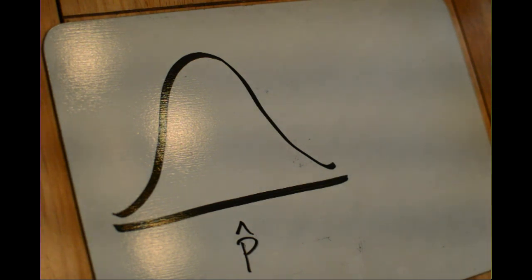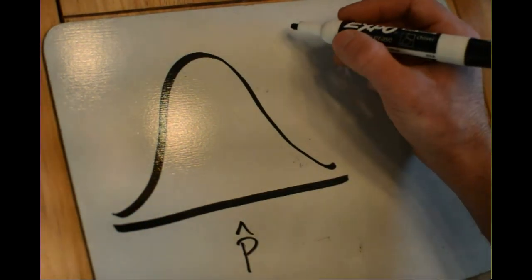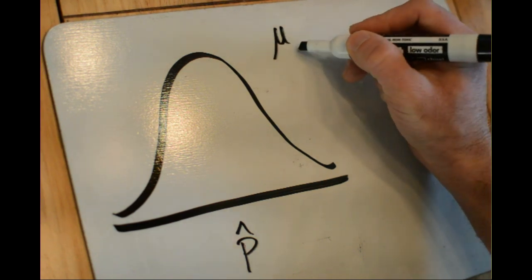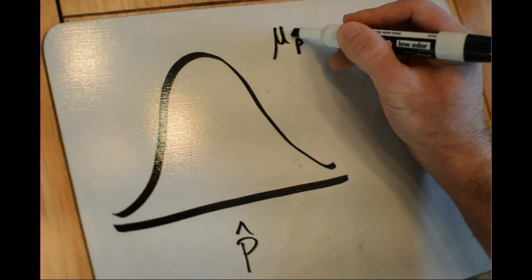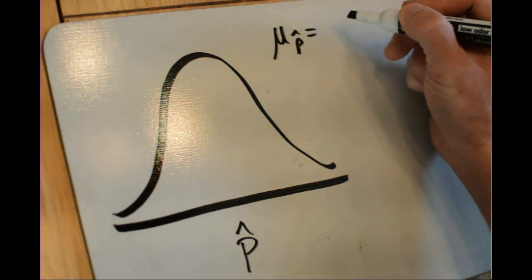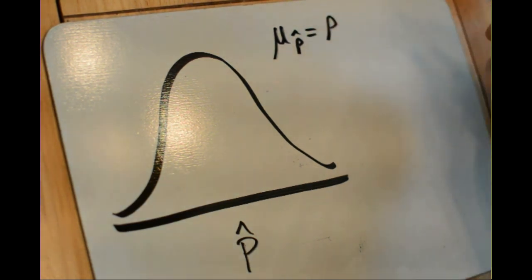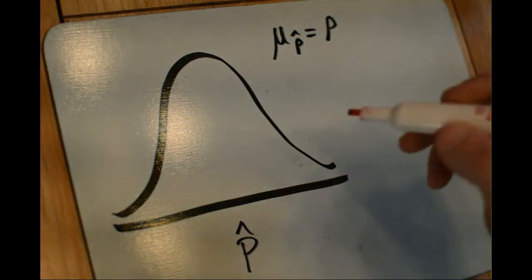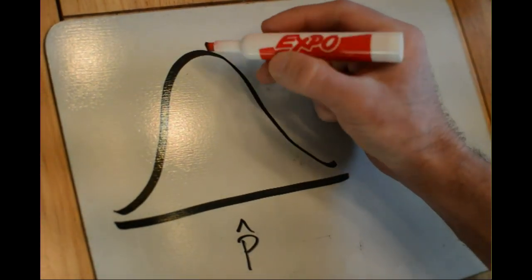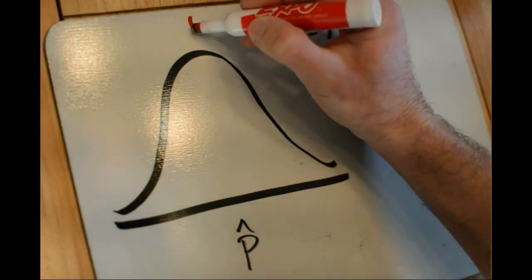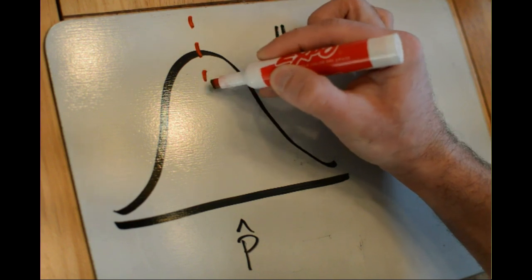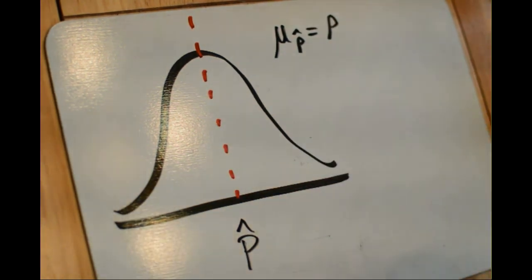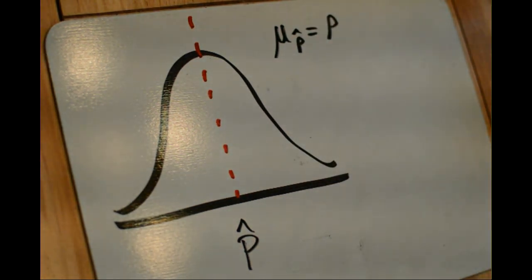Since p-hat is an unbiased estimator, the mean of all these p-hats is just the true proportion mean. So what that means is if these are all of the p-hats in our sampling distribution, it's centered right at the true parameter, p.